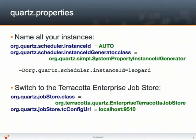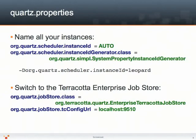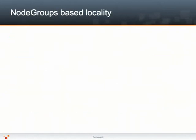The last two changes required to the quartz.properties configuration file are setting the job store to use the enterprise Terracotta job store, which adds the Quartzware feature, and configuring the URL of the Terracotta server. Your application is now ready to take full advantage of the Quartzware feature.